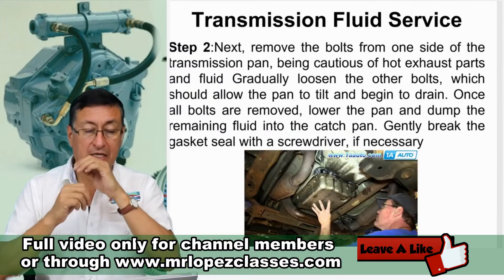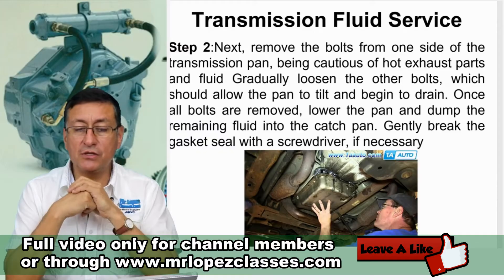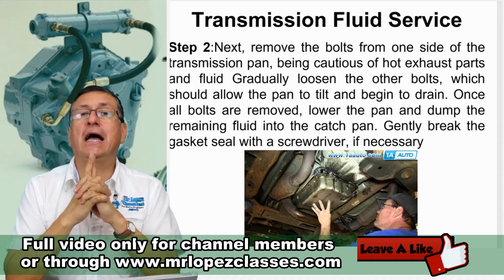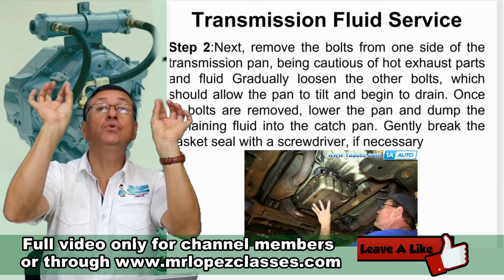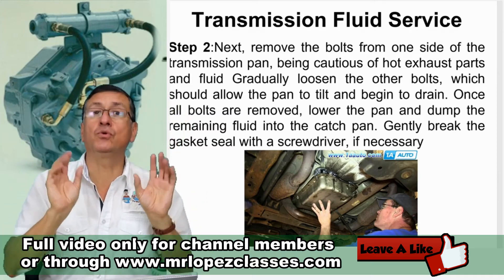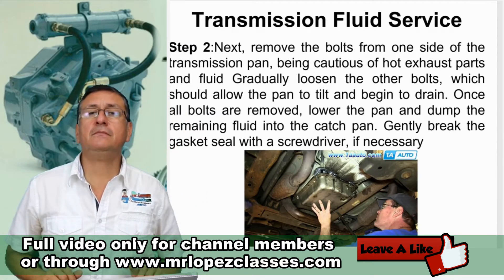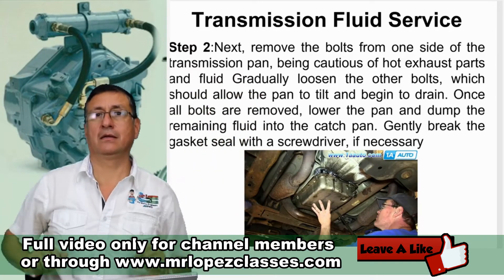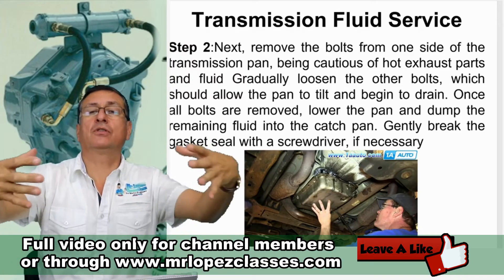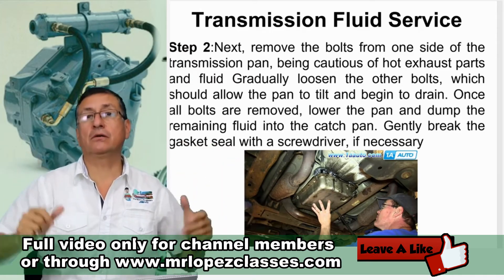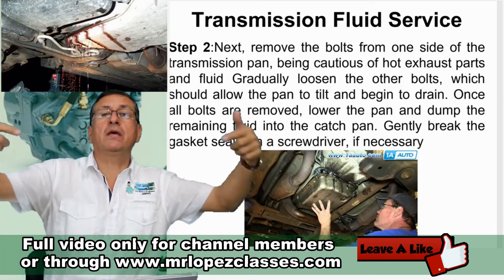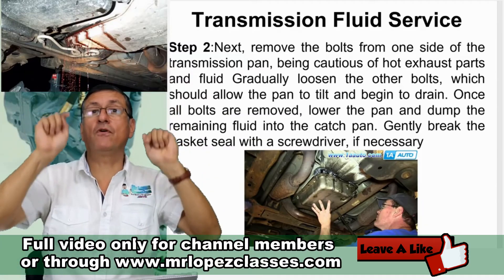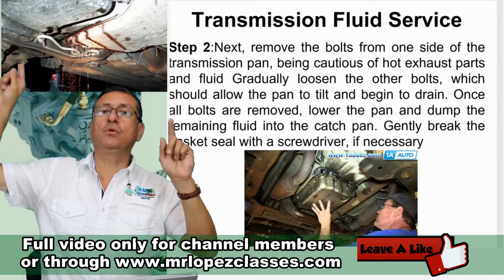Now we are going to check step number two: remove the bolts from one side of the transmission pan. The recommendation is to loosen all of them — only loosen, not remove. Try to keep two bolts in place in diagonal. Put a container to collect the oil — you need a big container with a larger diameter than the oil pan because a lot of oil will spill.